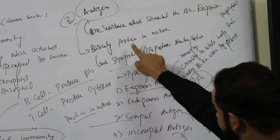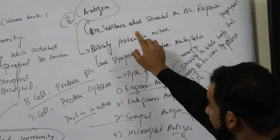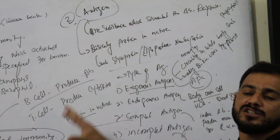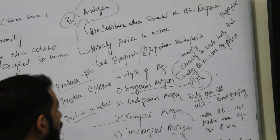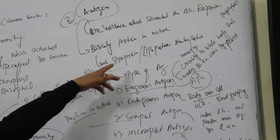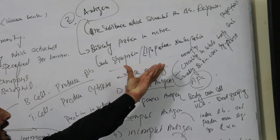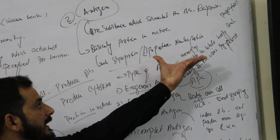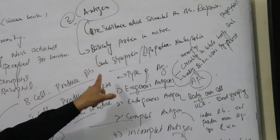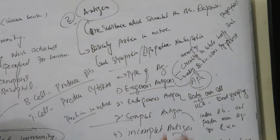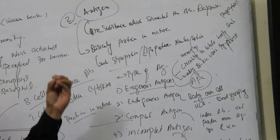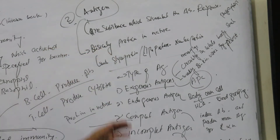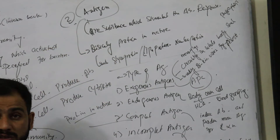Basically, an antigen — how is it in nature? It is a protein in nature. You can say it is a glycoprotein, lipoprotein, and lipoprotein. So an antigen is basically a protein in nature, and it acts as a stimulant to the body.